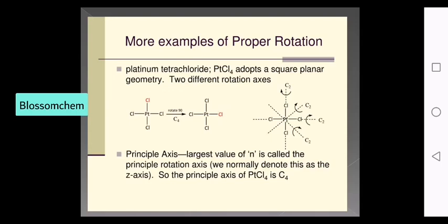This is a square planar geometry with a C4 axis and a C2 axis. The C4 axis corresponds to 90 degrees and the C2 axis to 180 degrees. The square planar geometry has 4 C2 axes and 2 C4 axes.